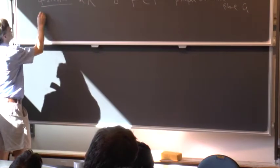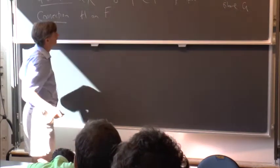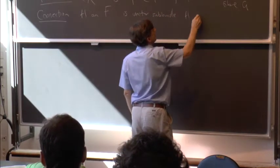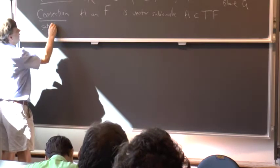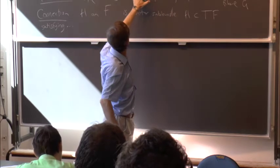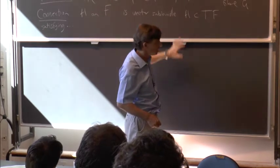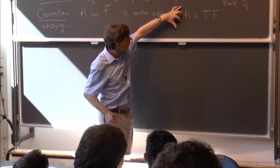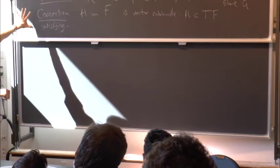Also, a connection H on F, the frame bundle, is some vector sub-bundle H sitting inside T, the tangent bundle of F, satisfying some conditions. So the conditions being that H is invariant under the GL(n,R) action. And the tangent bundle of F is a direct sum of the vertical sub-bundle and the horizontal sub-bundle H. Where the vertical sub-bundle is a kernel of the map from TF into the pullback of TX. That actually implies that H is now isomorphic to the pullback of TX.